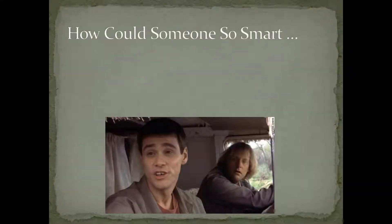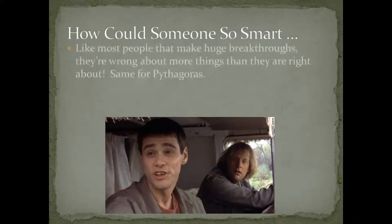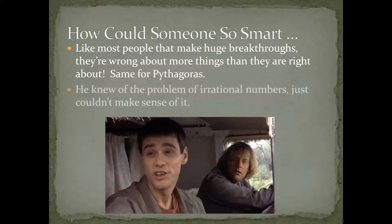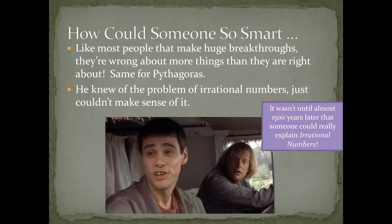Alright, so, how could someone so smart like Pythagoras be so dumb? Well, turns out he wasn't dumb. Not at all. The guy was brilliant. It took over 1,500 years for someone to really explain what irrational numbers were and make sense of it. That's one of the cool things about education. We can take all of the previous and past learnings and condense them and learn them without having to discover everything. And then, we can work on solving the problems that are presented to us today.